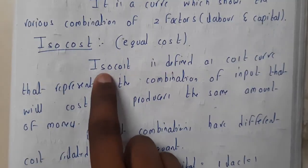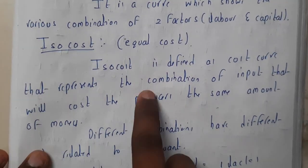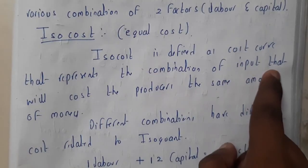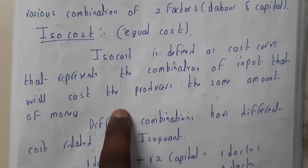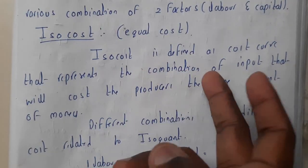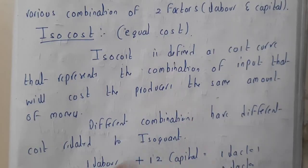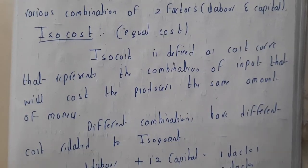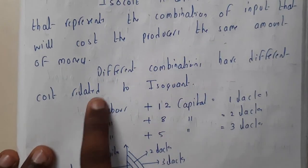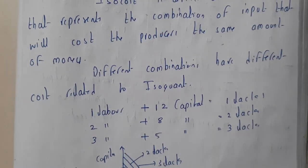Isocost is defined as the cost curve that represents the combination of input that will cost the products. Here also we'll be considering the two factors, capital and labor. According to that, the product cost will be constant. The different combinations have different costs related to isoquant. Here we used to have the same products, but the cost will be different.